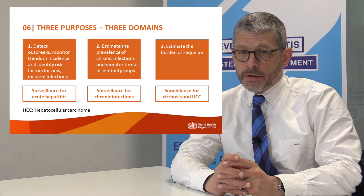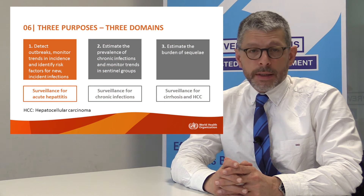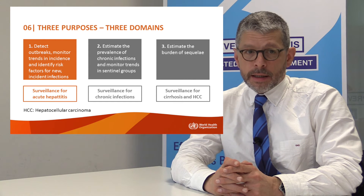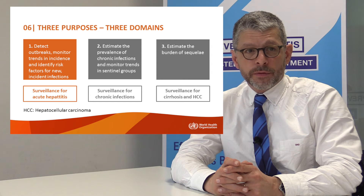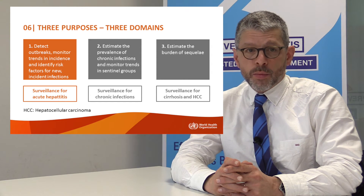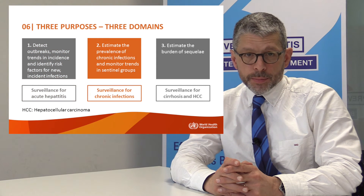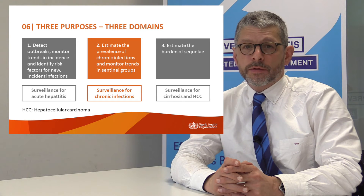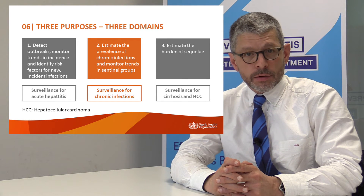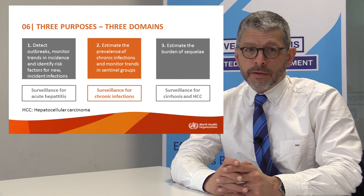Viral hepatitis surveillance has three main purposes. The first purpose is to detect outbreaks, monitor trends in incidence, and identify risk factors for new incident infections. This will be done with surveillance for acute hepatitis. The second purpose is to estimate the prevalence of chronic infection and monitor trends in sentinel groups, which will be done with surveillance of chronic infection.